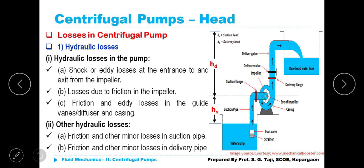Other hydraulic losses, friction and other minor losses in suction pipe, friction and other minor losses in the delivery pipe. These are all the various losses. You have to remember. The question may be asked, enlist the various losses in centrifugal pump, explained in brief. For five marks it can be asked. For enlisting one mark, for briefly explaining four marks, five marks question can be asked.